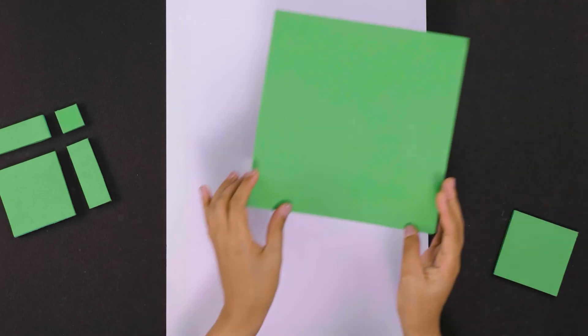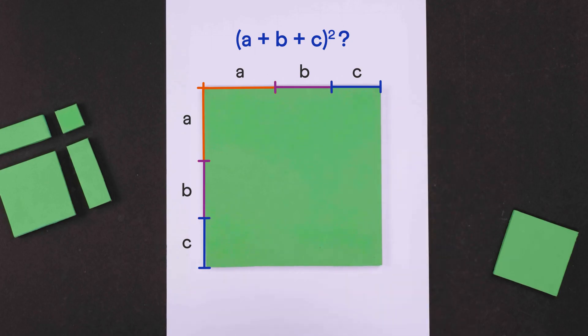Now, what if you had to find a plus b plus c whole squared? Solve it and let us know in the comments.